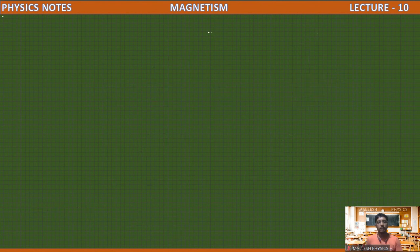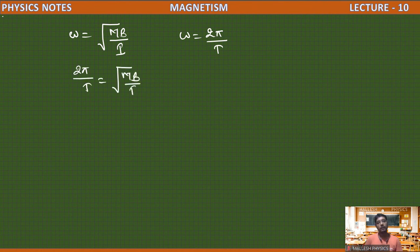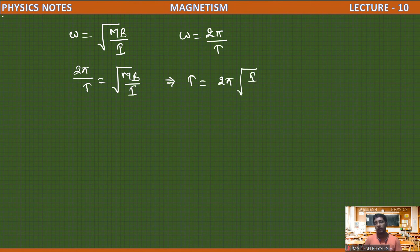From this, omega equals the square root of MB over I. Since omega equals 2 pi over T, we write 2 pi over T equals the square root of MB over I. From this equation, the time period T equals 2 pi times the square root of I over MB.